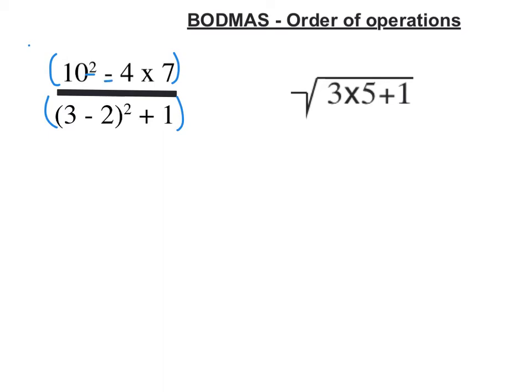So the top line I've got a power, I've got a subtraction and I've got a multiply. I do powers first. So it's going to become 100, 10 times 10, minus 4 times 7, all over. Now again I do things in brackets first here. So this is going to become 1 squared plus 1.